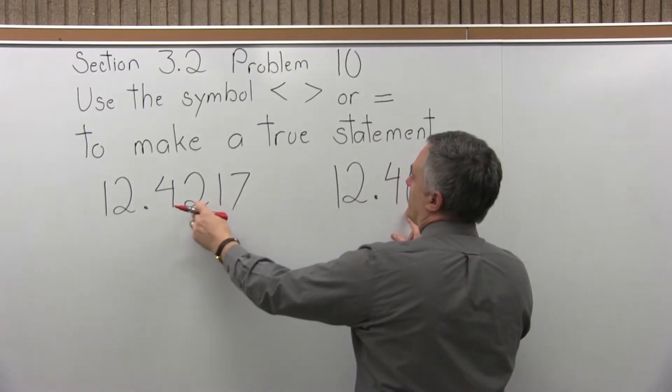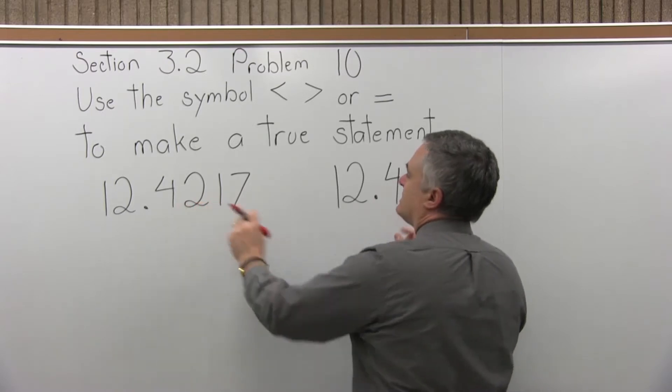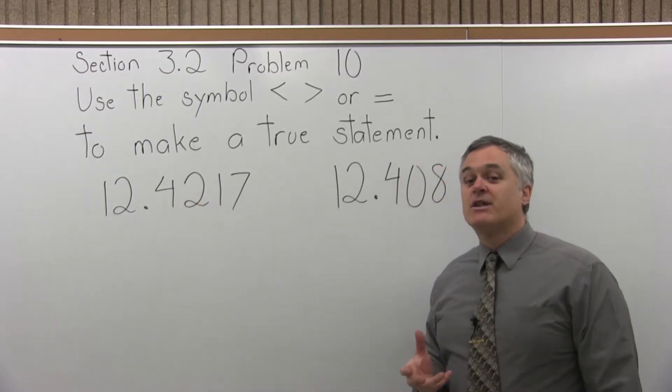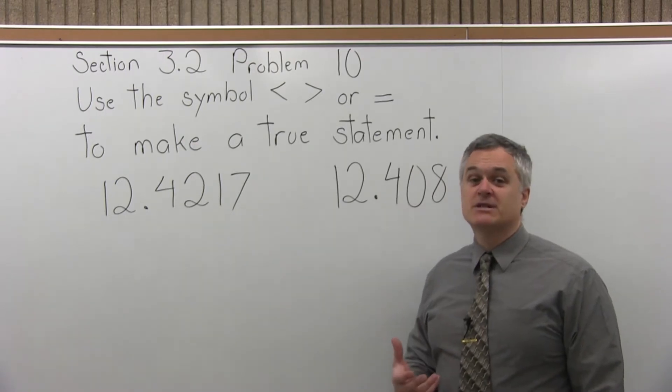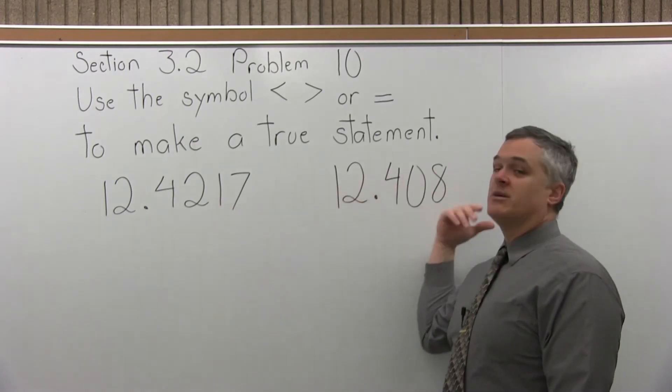Now, you have a difference. One has a digit of two. The other has a digit of zero. So now, the number with the two in that position makes it the larger number, regardless of what comes after it.